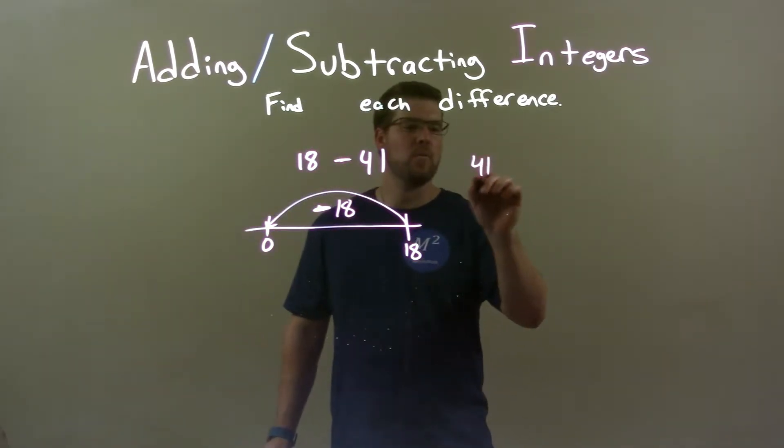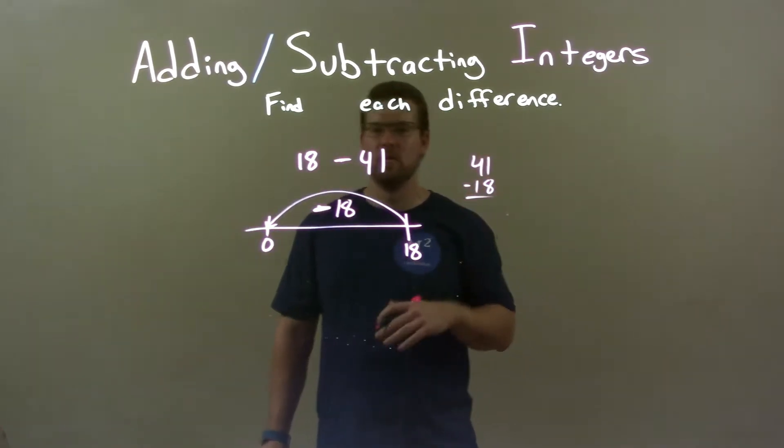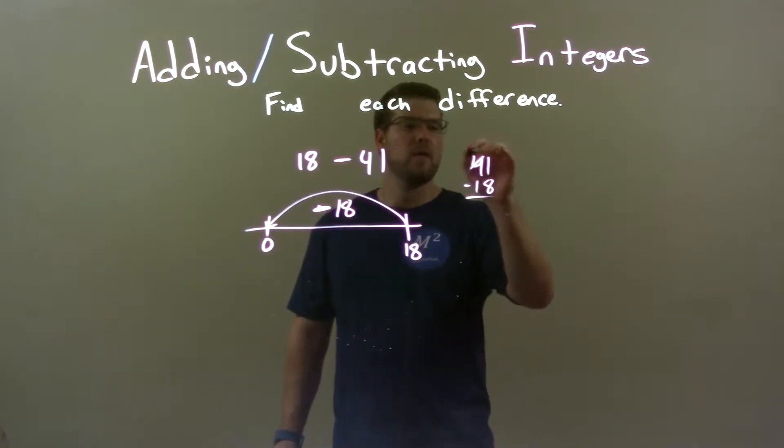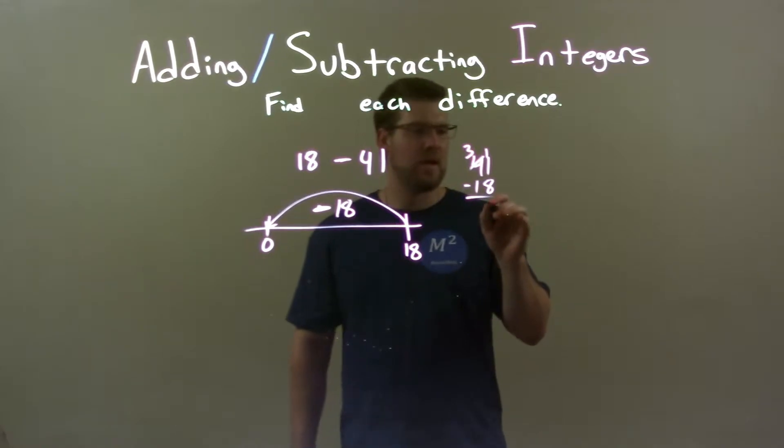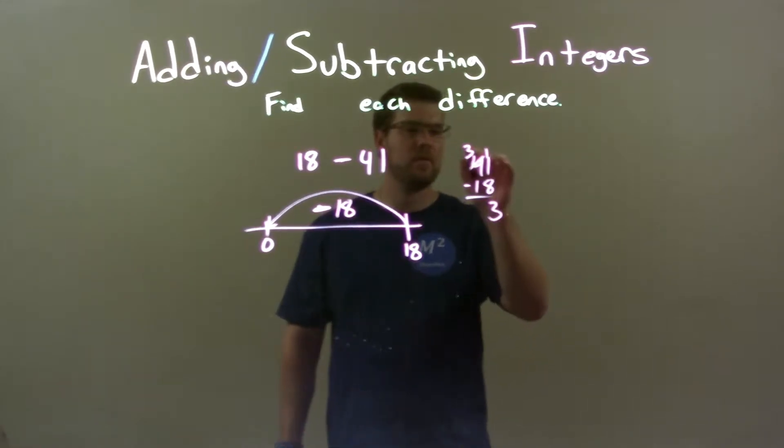So, if I take 41 and I subtract 18 from it using the traditional method, we have 3 there, 1 carry it. 11 minus 8 comes out to be a 3. 3 minus 1 is a 2. And we have 23.